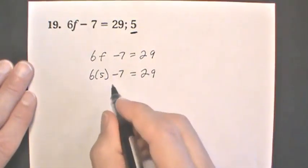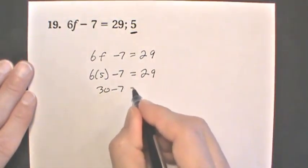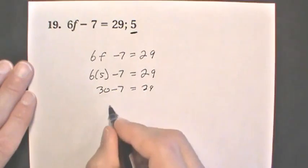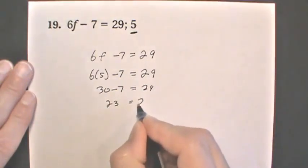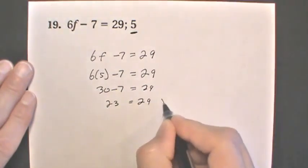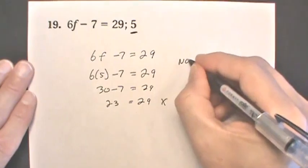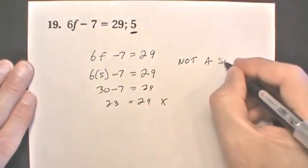And then we have 30 minus 7 is 29. 30 minus 7 is 23, not equal to 29. So this is not a solution.